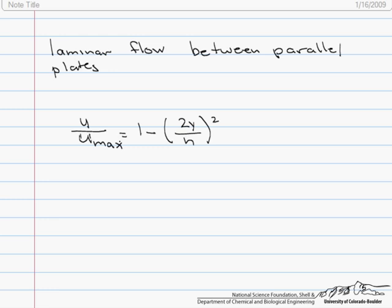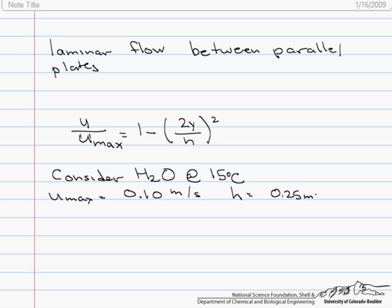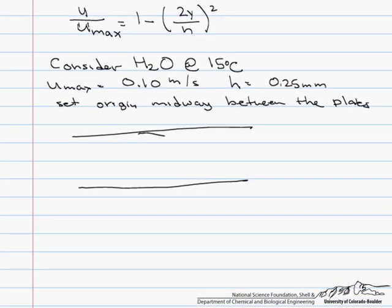And so what we are asked to do here is consider water at 15 degrees C, u max equals 0.10 meters per second, and h, which is the distance separating the plates, is 0.25 millimeters. And we are going to set the origin midway between the plates, and the reason for that is if you actually drew the velocity distribution, it would look like this, and what you should hopefully be able to see from it is that it is symmetrical, with the max being at the origin right here.